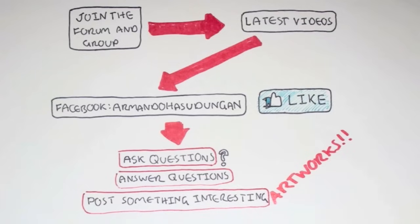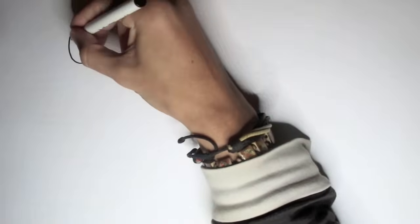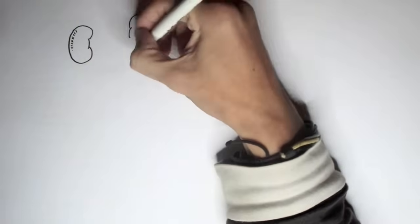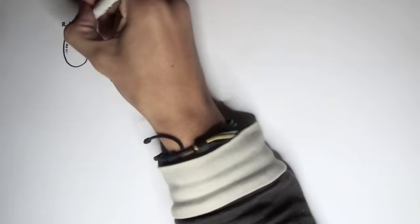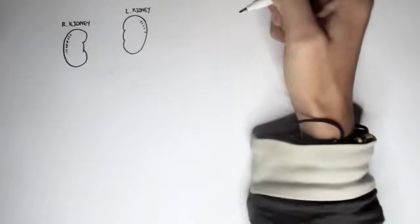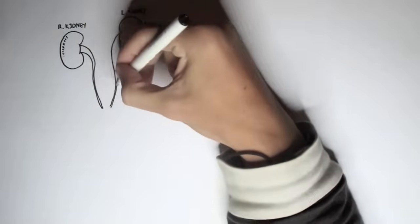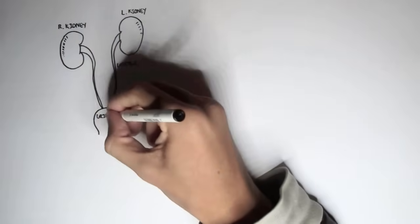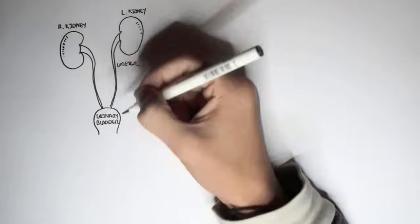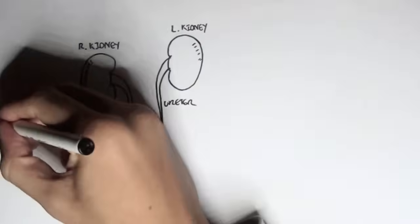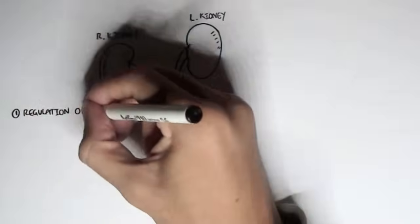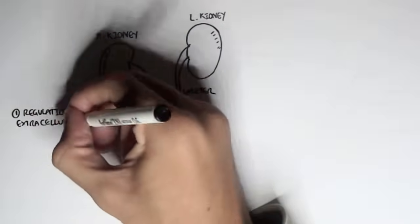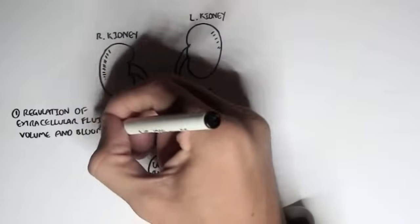In this video we're going to talk about the physiology of kidneys to an extent. Just recapping: remember we have two kidneys, the right kidney and the left kidney, and we have the ureter which then deposits the urine, or the waste, into the urinary bladder which then gets excreted. The kidneys have many functions — let's look at some of them.